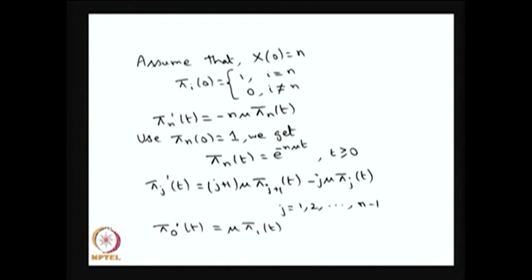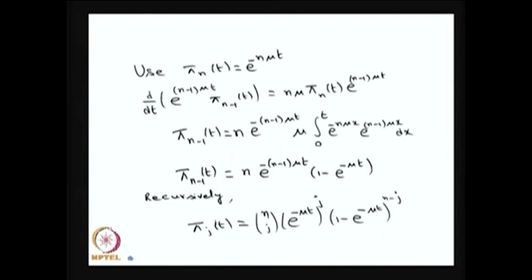Knowing pi_n(t), substitute into the equation for n−1 to get pi_{n-1}(t), and continue recursively until pi_1 and then pi_0(t). Using this recursive approach, pi_j(t) = C(n,j) * e^(−mu*t)^j * (1 − e^(−mu*t))^(n−j). This is the binomial distribution: the survival probability e^(−mu*t) represents remaining in a state, so pi_j(t) follows a binomial distribution with parameter e^(−mu*t), representing the probability of being in state j given the system started in state n.